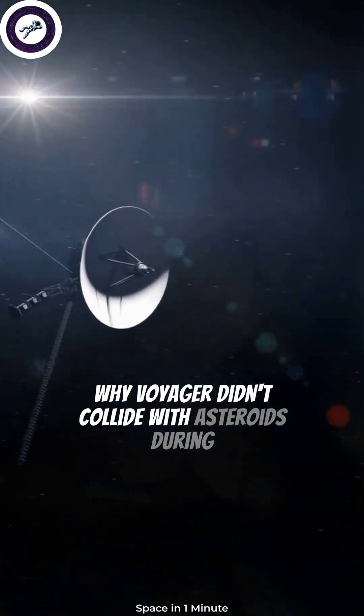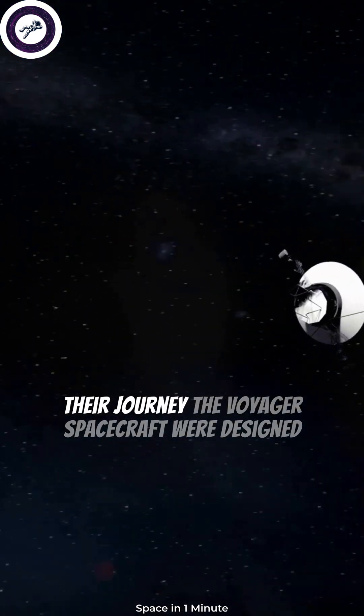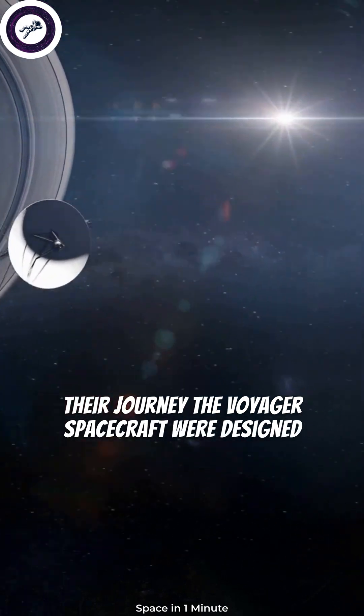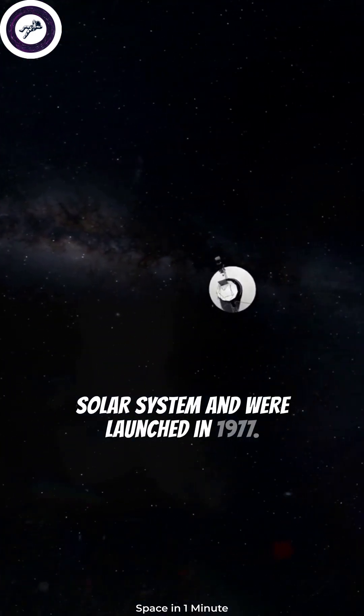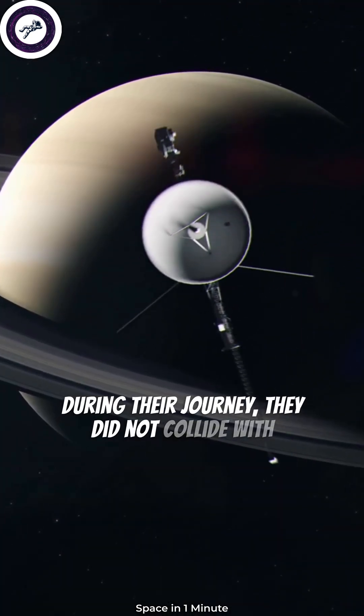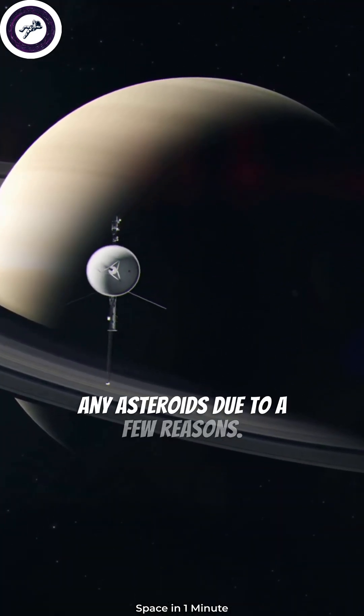Why Voyager Didn't Collide With Asteroids During Their Journey. The Voyager spacecraft were designed to explore the outer planets of our solar system and were launched in 1977. During their journey, they did not collide with any asteroids due to a few reasons.